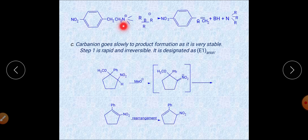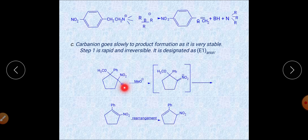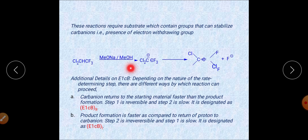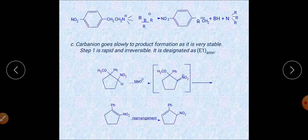Some examples show the E1cb mechanism in action. The hydrogen is first eliminated by the base, then a carbanion is synthesized, and the carbanion helps remove the leaving group to form the alkene. Similarly in another example, the base eliminates hydrogen, forming a carbanion (C⁻), which is then converted into the product.